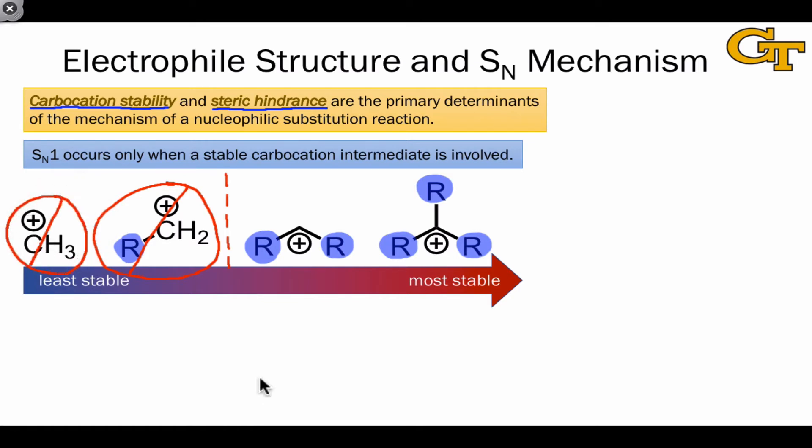The one exception to this idea, which isn't really an exception at all, are cations characterized by resonance stabilization, that is, delocalization of the positive charge over multiple atoms. These cations can and often do form in SN1 reactions. And the tertiary and secondary carbocations are, of course, fair game in SN1 reactions as well.